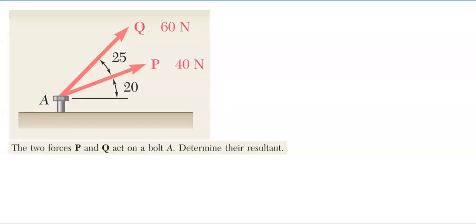Hello, everyone. Today we're going to be solving this problem here on the left via the rectangular components and resultants method. We have two forces P and Q that are acting on bolt A, as shown with the angles, and we have to determine the resultant of these two forces.